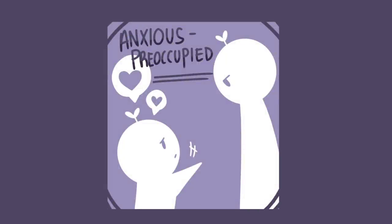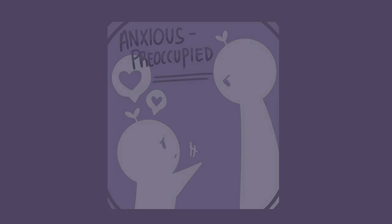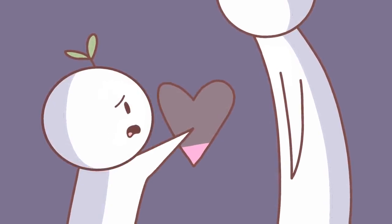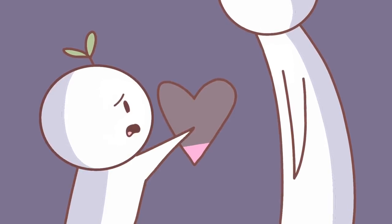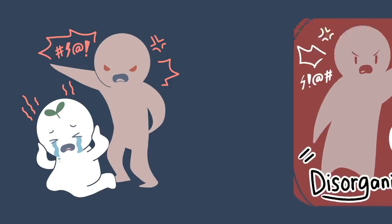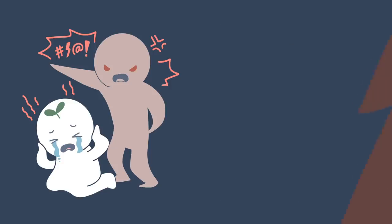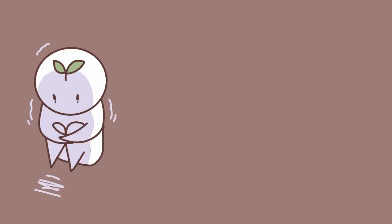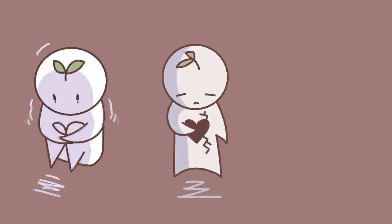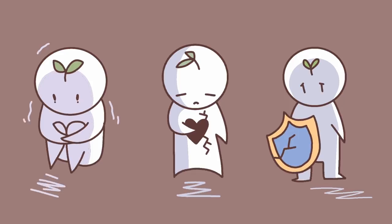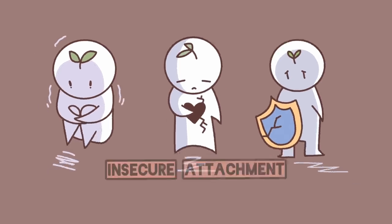Anxious preoccupied, also known as ambivalent attachment style, is when needs were not always satisfied in childhood. You grow up overvaluing love and doubting your own self-worth. Disorganized attachment is found when the child is raised in an abusive, traumatic, and chaotic home environment. Individuals with this style are believed to be extremely traumatized, emotionally numb, and have no sense of safety or security anywhere. It's also called insecure attachment.